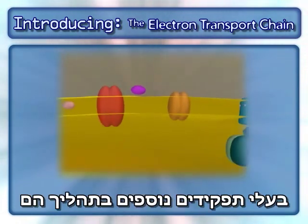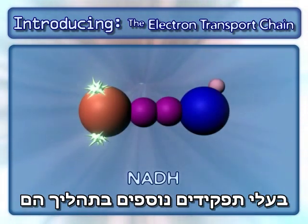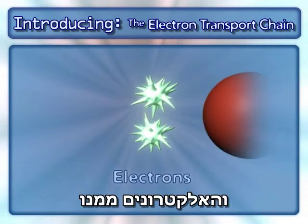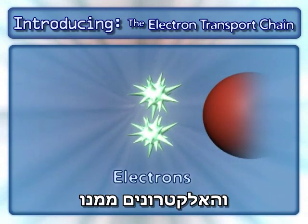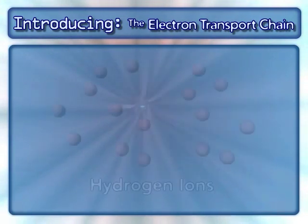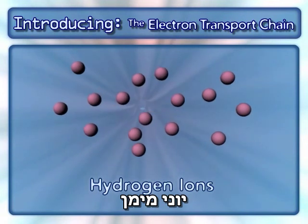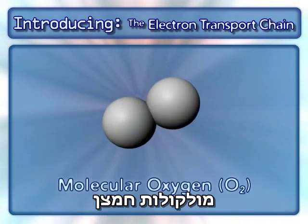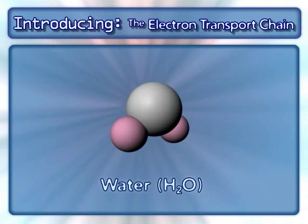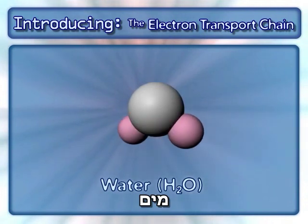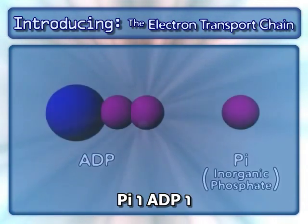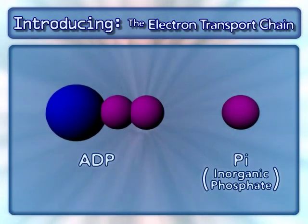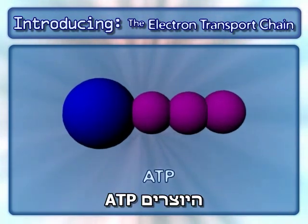Other key components in this process are NADH and the electrons from it, hydrogen ions, molecular oxygen, water, and ADP and inorganic phosphate, which combine to form ATP.